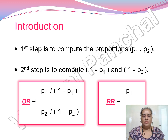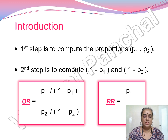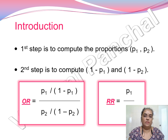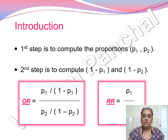The first step is to calculate the proportions p1 and p2, and the second step is to compute 1 minus p1 and 1 minus p2. On screen you can see the usual formula for calculating the odds ratio and relative risk based on their proportions.